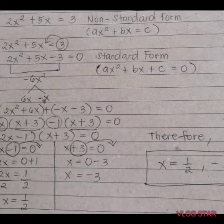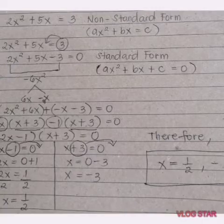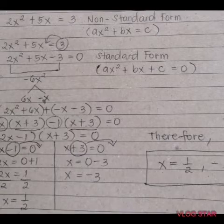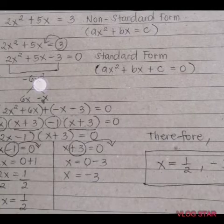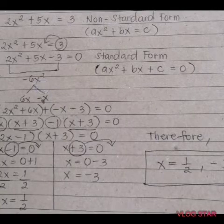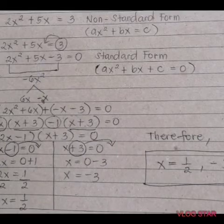Now, to factor out, multiply the first term and the last term: 2x squared times negative 3 gives negative 6x squared. What are the factors of negative 6 that, when multiplied, give negative 6, and when added, give 5x? The factors are 6x and negative x.